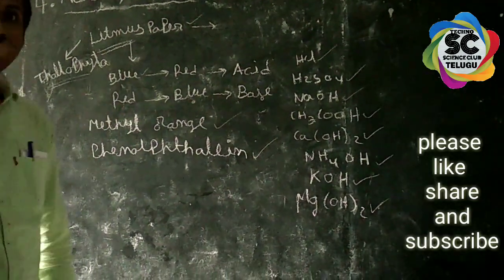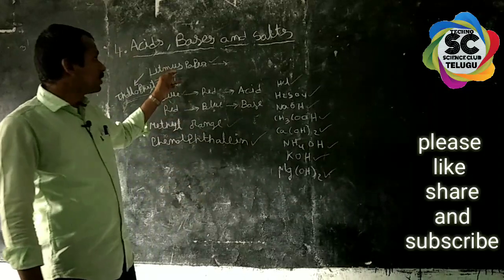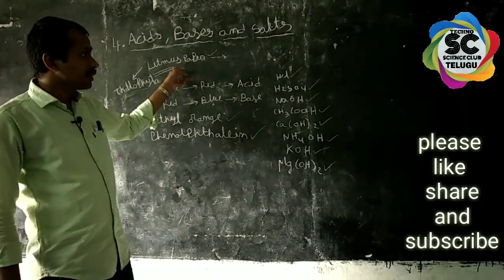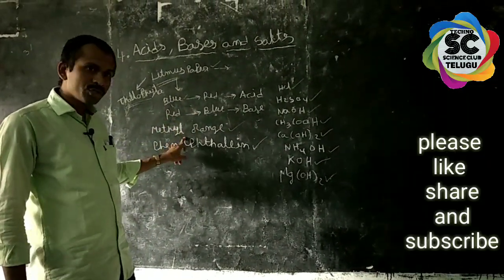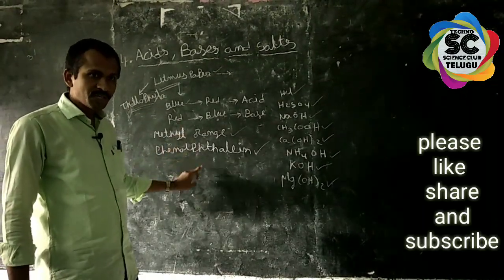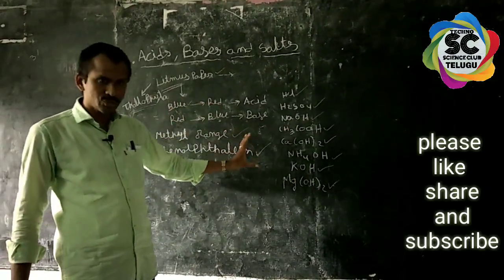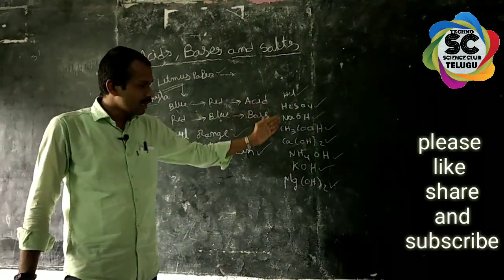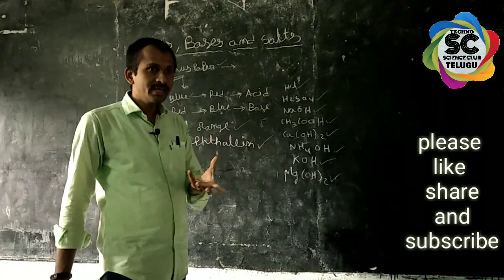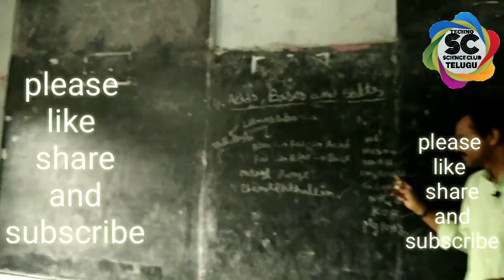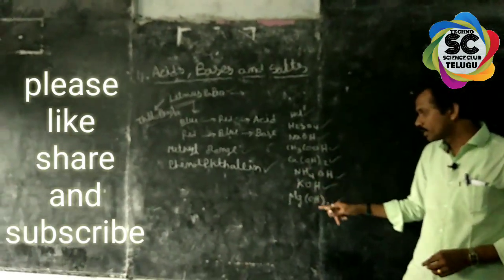We will use these solutions in test tubes. Testing materials include: blue litmus paper, red litmus paper, methyl orange solution, and phenolphthalein solution. We will use these to test the acid and base solutions such as NaOH, Acetic Acid, Calcium Hydroxide, and Ammonium Hydroxide.